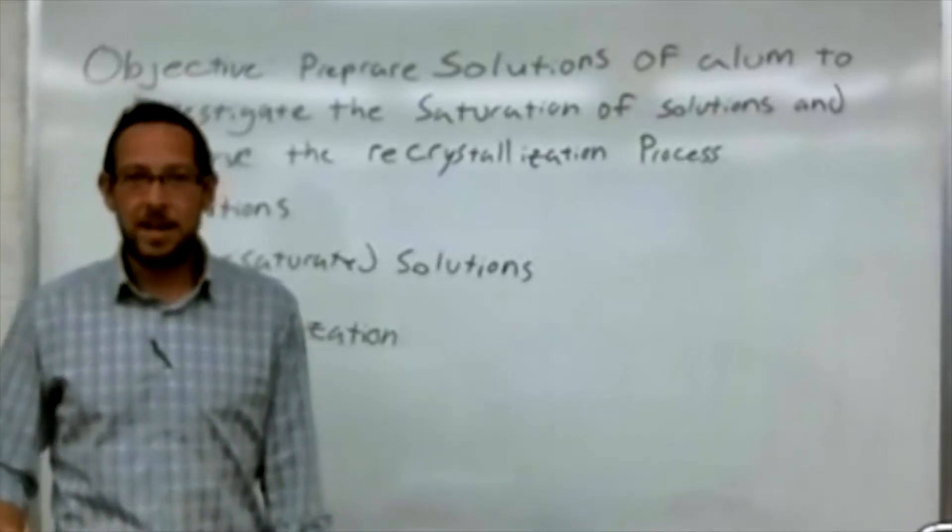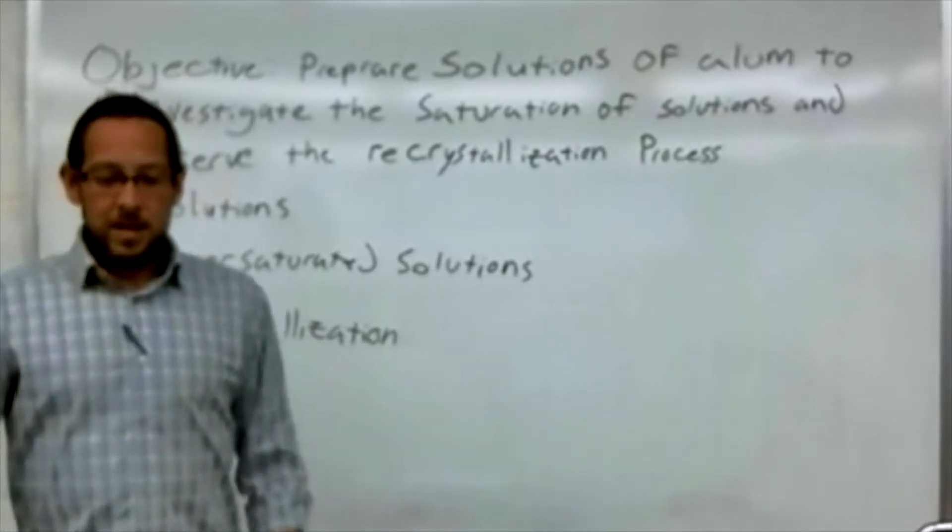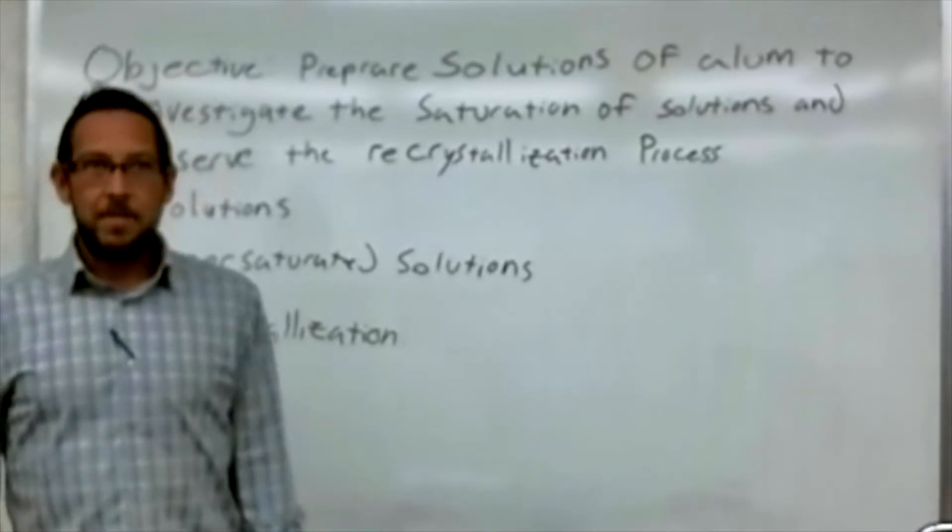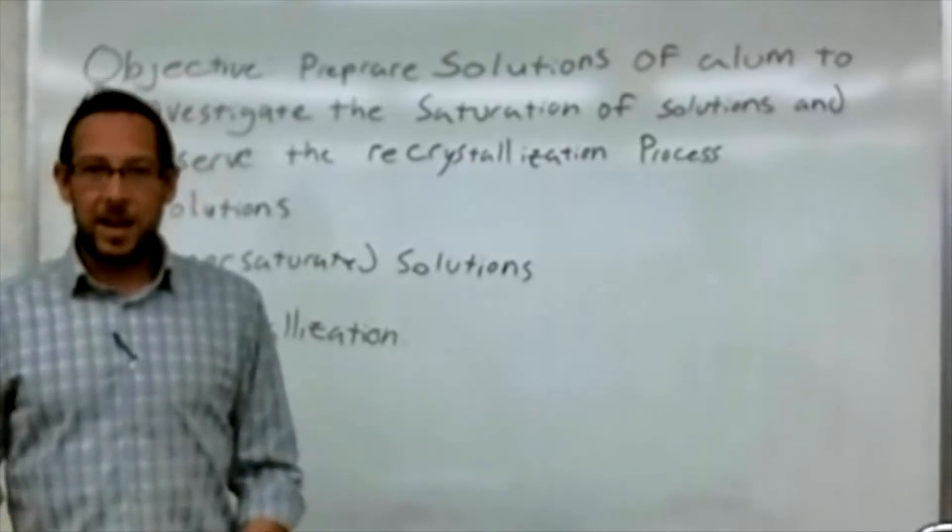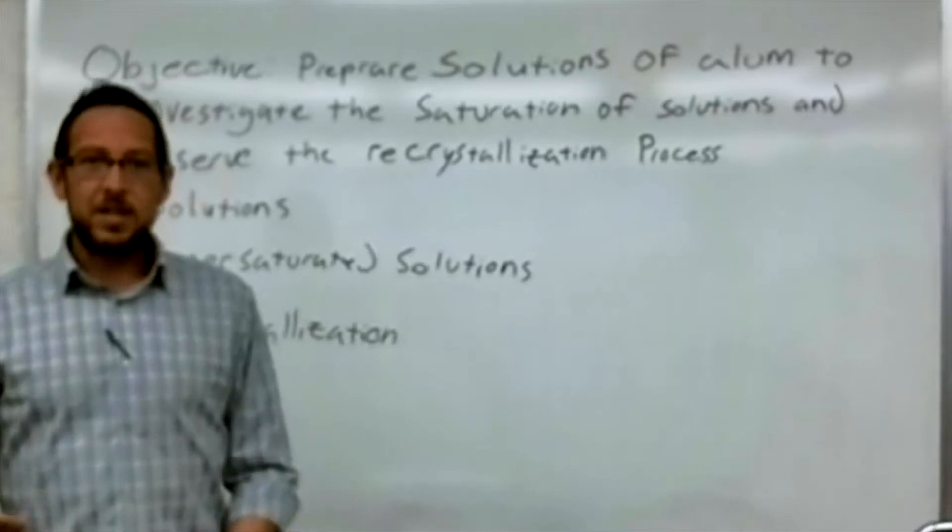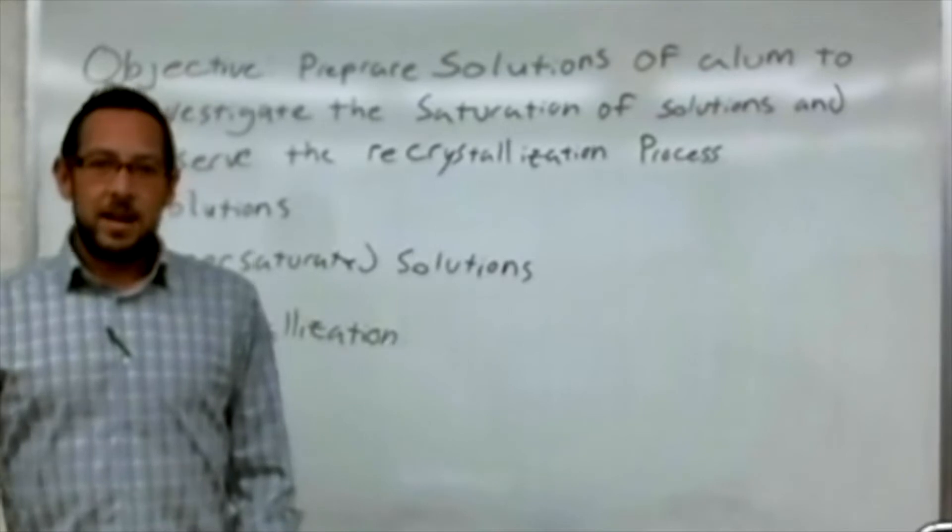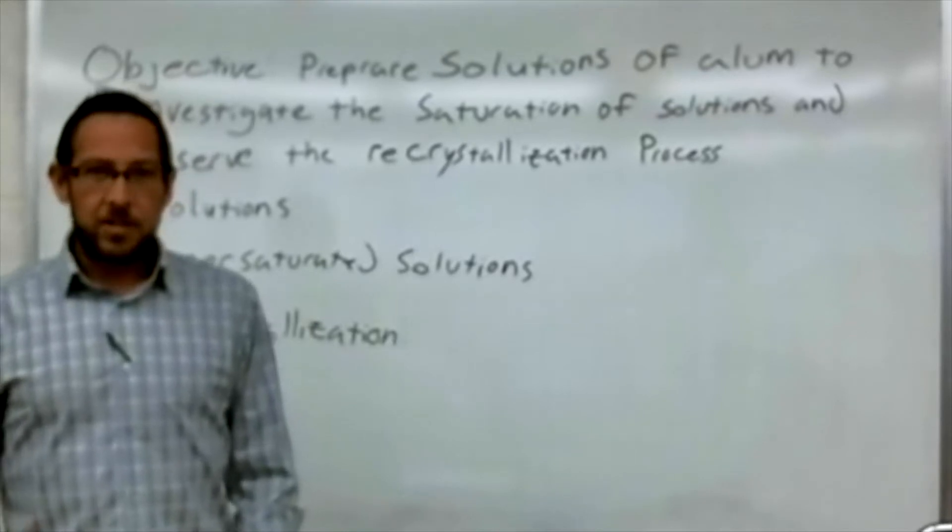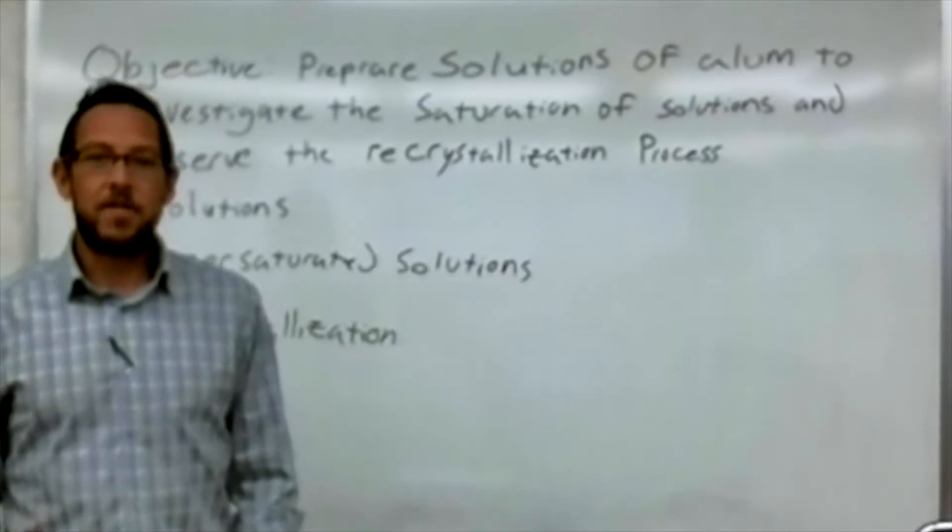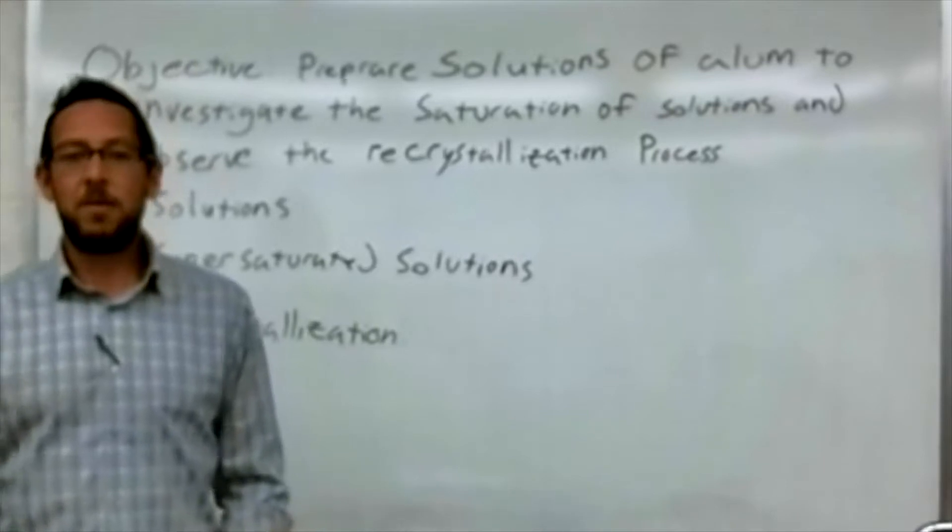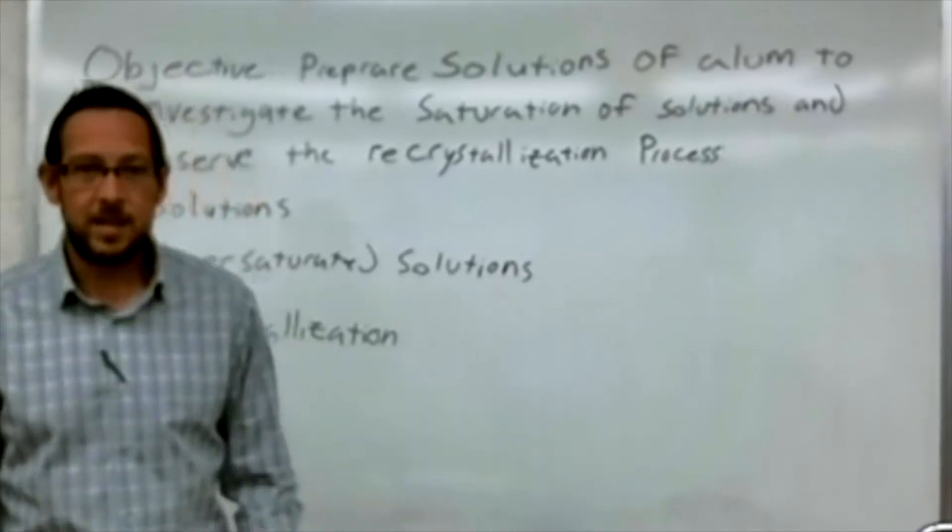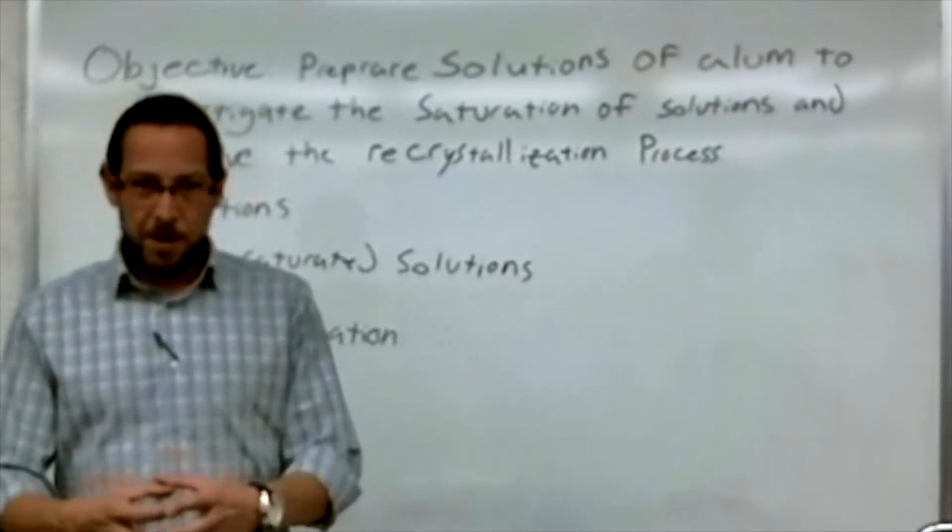From there, we sent our solution through a vacuum filtration system, where we reclaimed just the pure liquid solution of our alum. Then we added in concentrated sulfuric acid. From there, we reclaimed actual crystals by running them through another vacuum filtration system and had pure crystal.